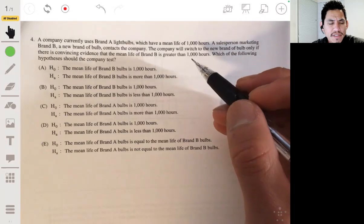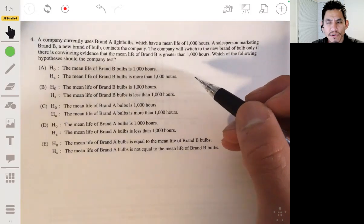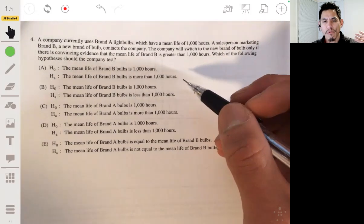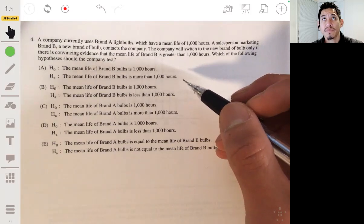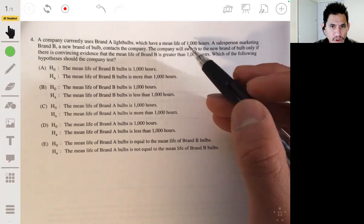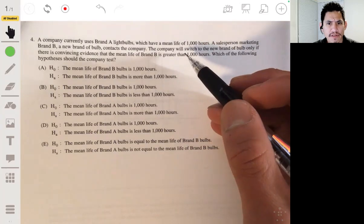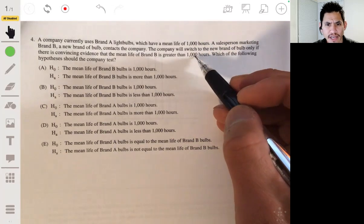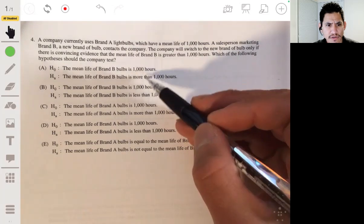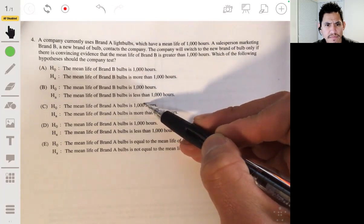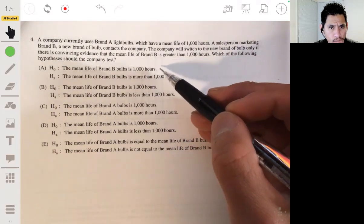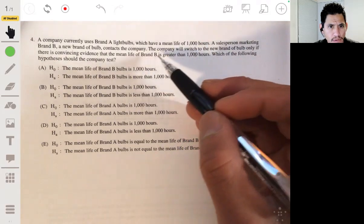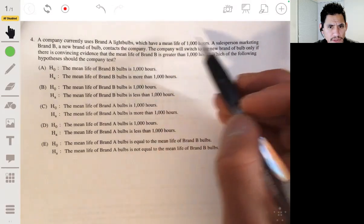So the null hypothesis versus alternative. So remember the null hypothesis is basically the status quo. You just assume that whatever we're trying to disprove is true. So the null hypothesis would be that the true mean is 1,000 hours. So let's see which of these would be. Brand A light bulbs.